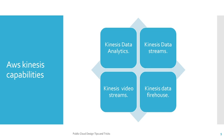AWS Kinesis capabilities are divided into four parts: Kinesis Data Analytics, Kinesis Data Streams, Kinesis Video Streams, and Kinesis Data Firehose. The benefits of AWS Kinesis Services are that it is real time, fully managed, and scalable.